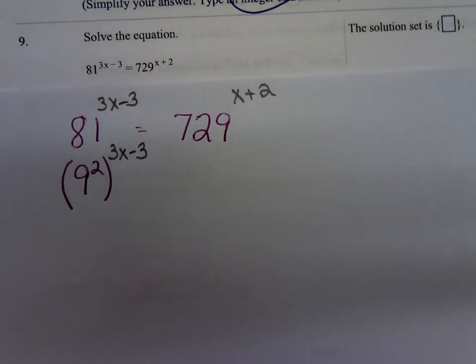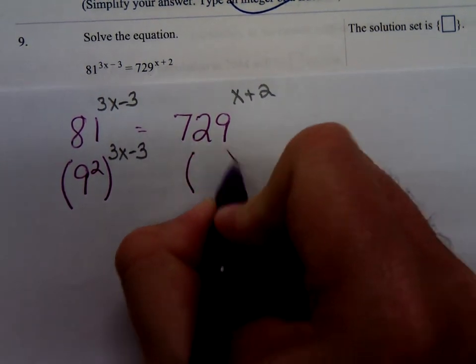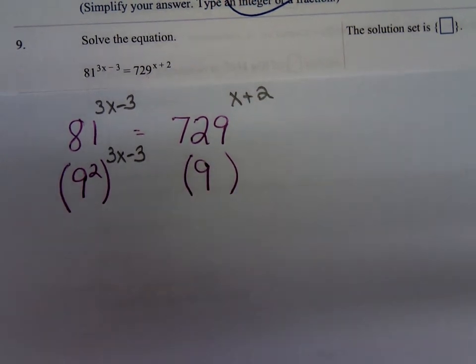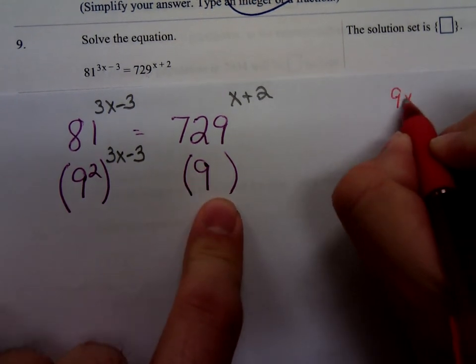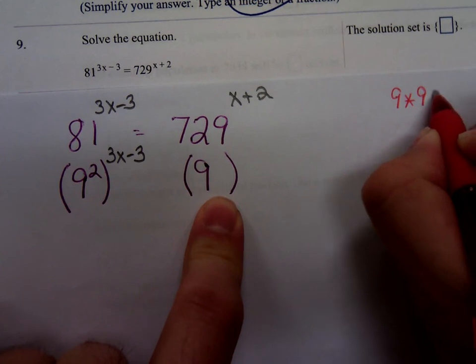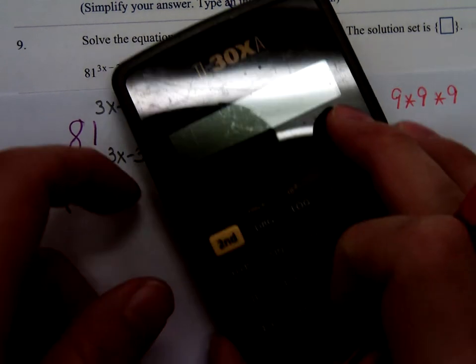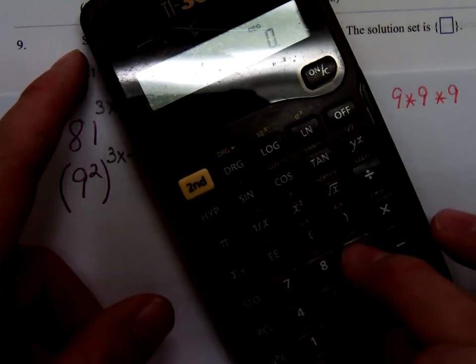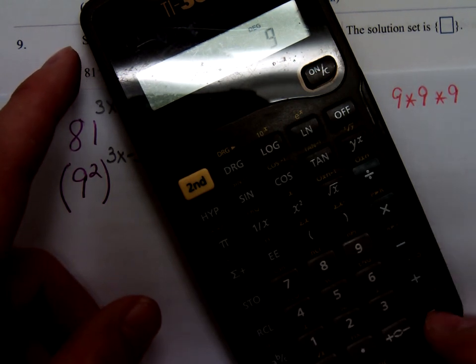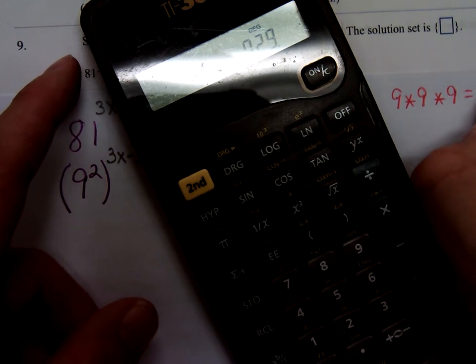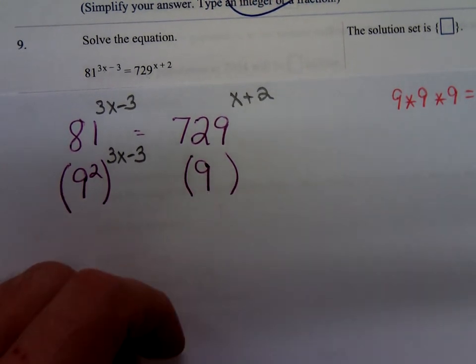Now, what about 729? Can we raise 9 to a power and get 729? Let's see. We start multiplying 9. 9 times 9 would be 81. 81 times 9, is that 729? This is my old-fashioned calculator. 9 times 9 is 81, times another 9, 729. So, 9 to the 3rd is 729.